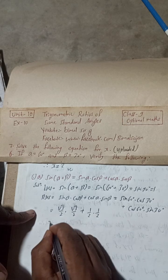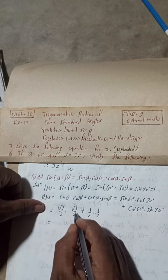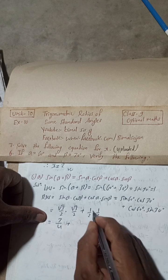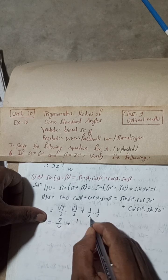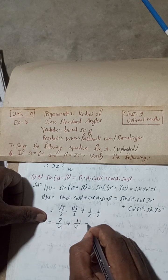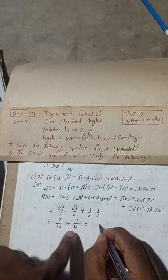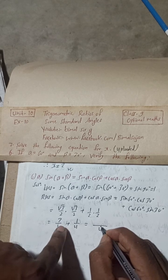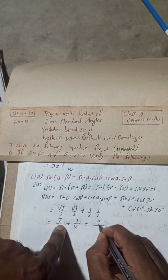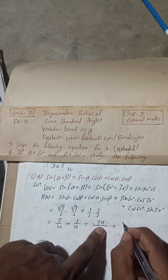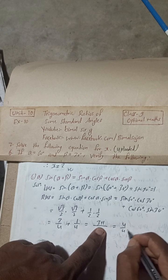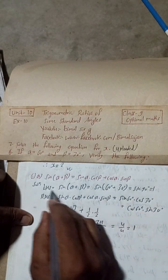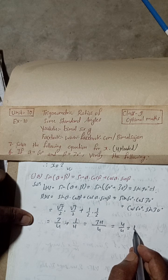So what you see here: root 3 into root 3 gives 3, over 2 by 2 which is 4, plus 1 by 1 over 2 by 2 which is 4. So this is equal to 3 by 4 plus 1 by 4, which equals 4 by 4, equal to 1.